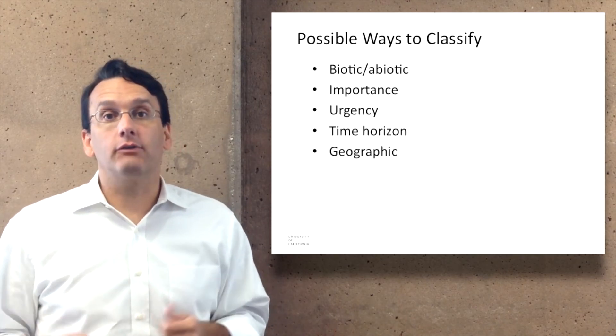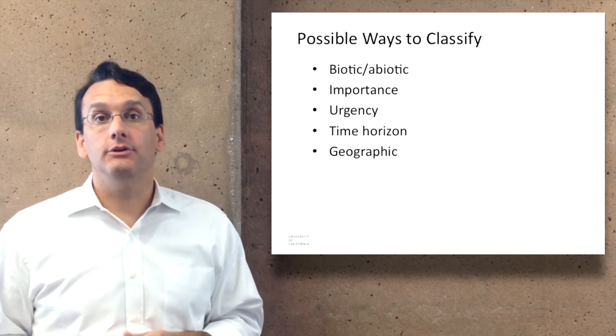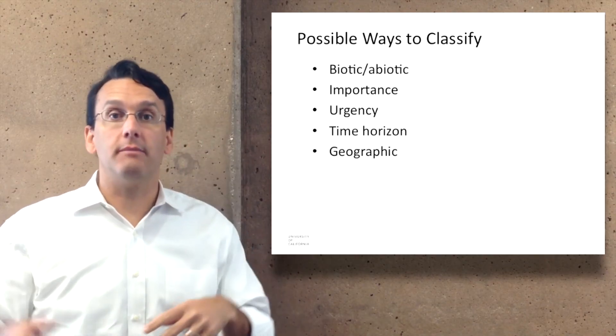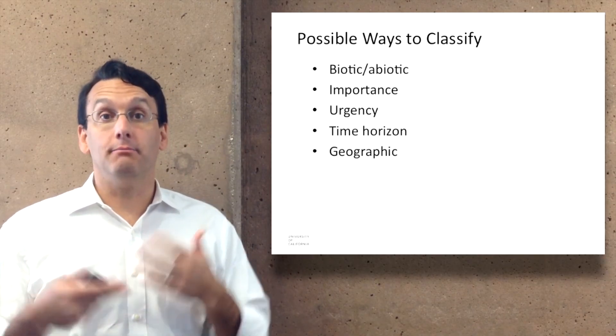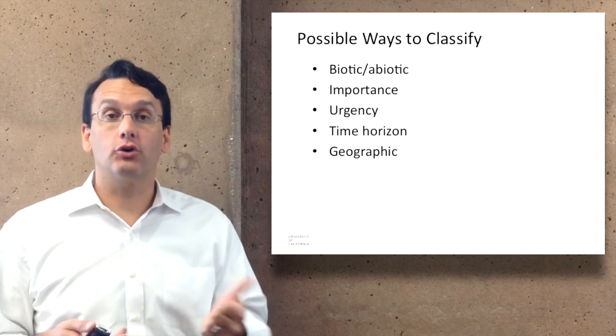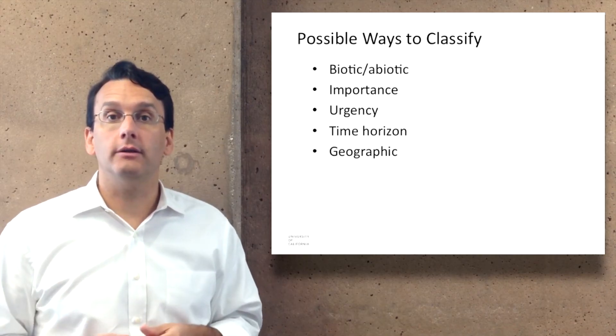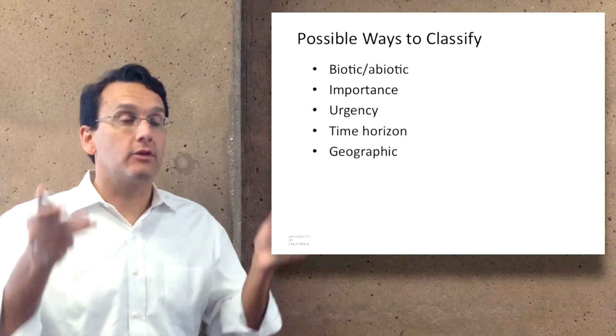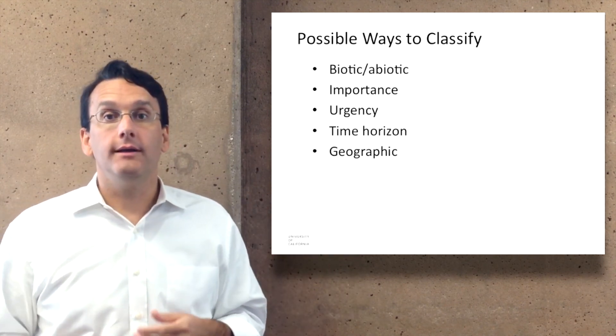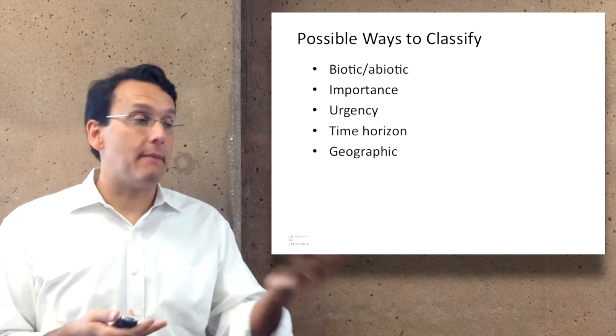You can imagine there are a variety of different ways to classify these topics. You can distinguish ones that have to do with living things versus not, so biotic versus abiotic. You could sort them by importance, but here you have a challenge of who's decreeing which one is more important. You can have urgency, which one has the most time pressure on it. You can do it by a time horizon, whether they're things that happen over a narrow time horizon or a longer one. You can sort them geographically.